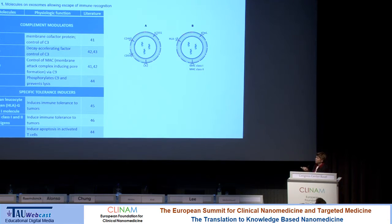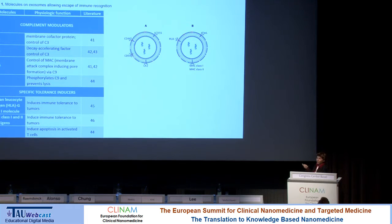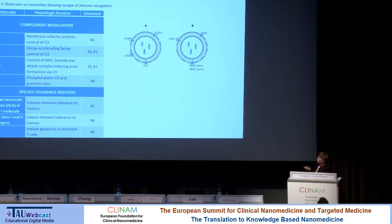So it looks like that when we bind some of these molecules to our normal nanoparticles, we are able to avoid or modulate the immune response. This is one of the lessons we can learn from nature's already immune-stealthy nanoparticles — that binding the right ligands on the surface, which actively interact with the immune system, can allow us to easily avoid getting a real immune response or modulate it so that recognition is avoided.